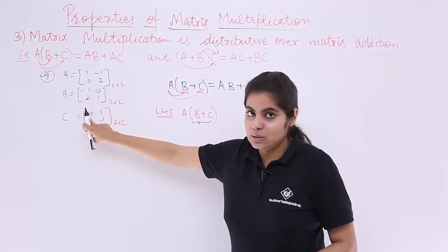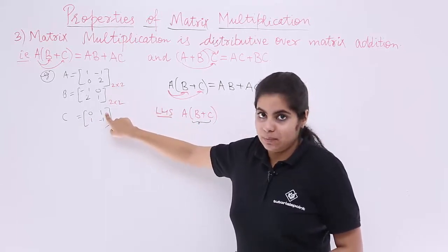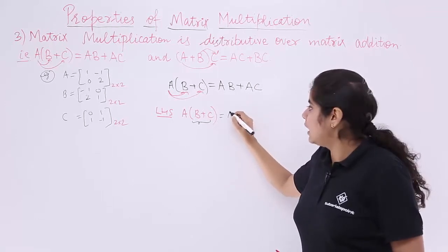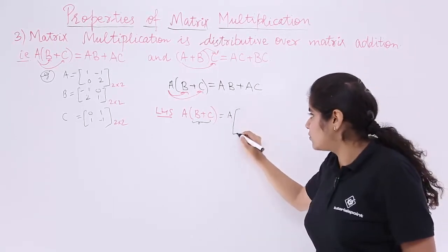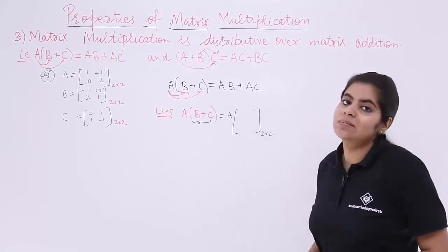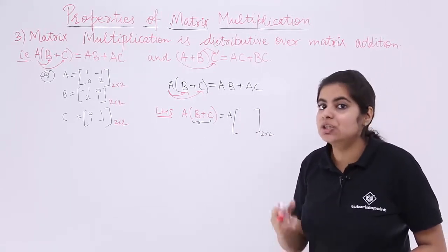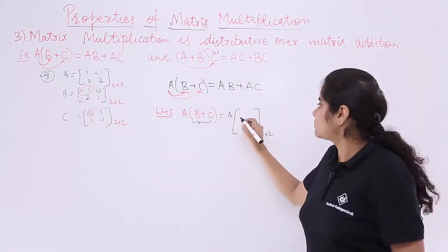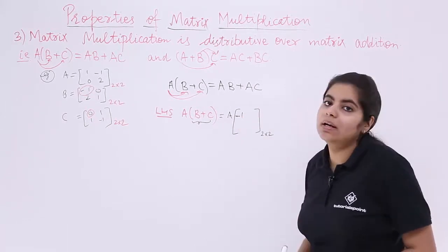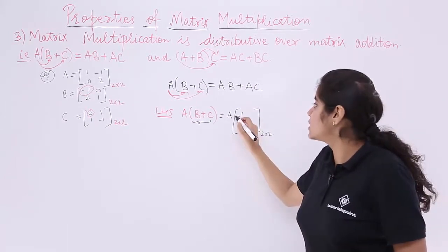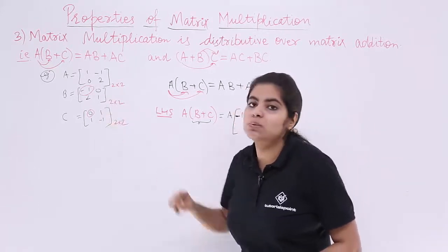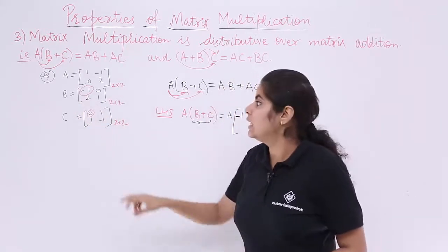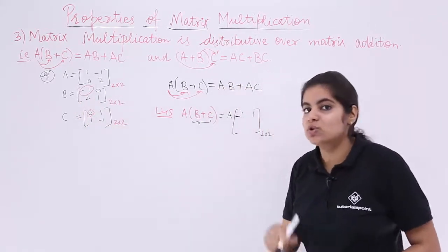Computing B plus C: minus one plus zero is minus one; zero plus one is one; two plus one is three; one minus one is zero. So B plus C is the matrix [-1, 1; 3, 0].